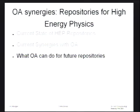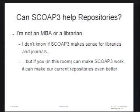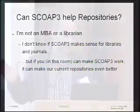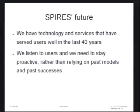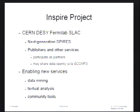This is the final third of my talk, so we may actually make lunch without losing our appetizers. So how can we make a better repository? How can SCOAP3 help us do that? I run Spires — I'm not really a librarian, I'm not an MBA, I don't know if this stuff makes sense financially. But if you can make it work, here's how it can make my life better. At Spires, we've been running for over 40 years, but that doesn't mean we want to stay that way. We want to build something new, to stay ahead of our users and stay proactive. We're working on a new project with CERN, with DAISY, with Fermilab, with SLAC, to build a next-generation Spires service.